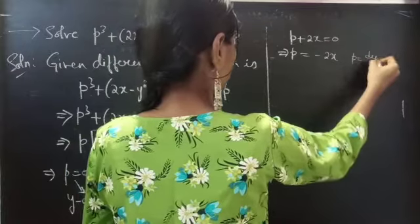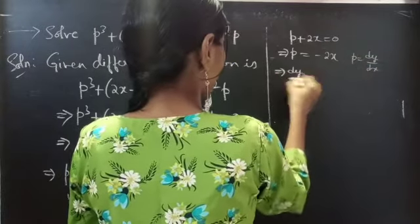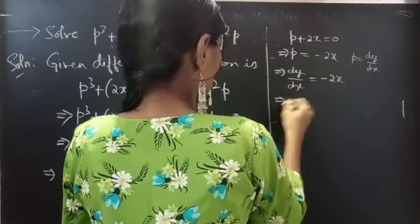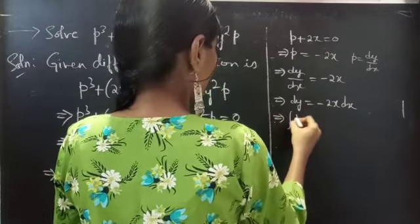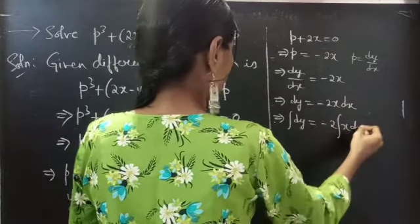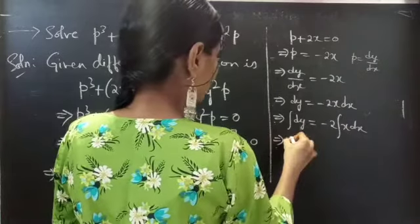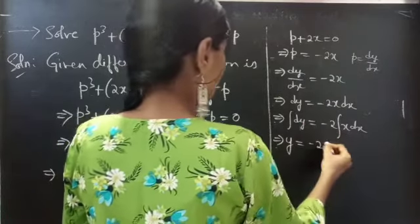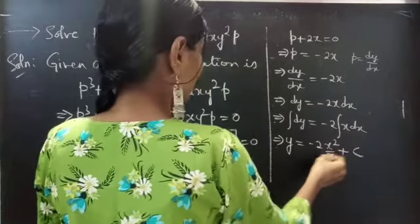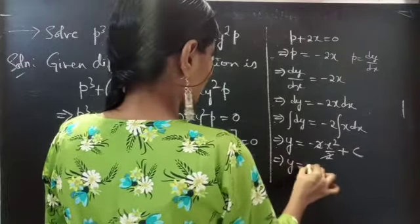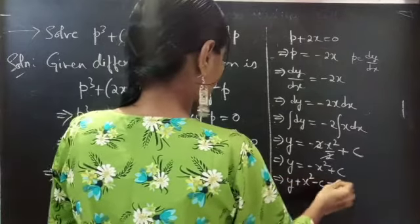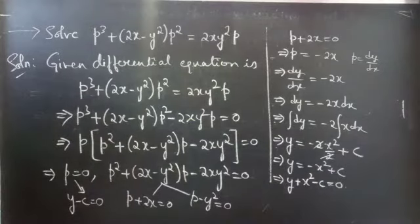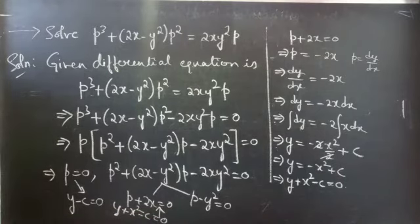Put P equals to DY by DX. Then DY by DX equals to minus 2X, so DY equals to minus 2X DX. Integrating both sides: Y equals to minus 2 times X square by 2 plus C, and the 2 cancels, giving Y equals to minus X square plus C. Taking all terms to the LHS: Y plus X square minus C equals to 0, which is the solution for P plus 2X equals to 0.